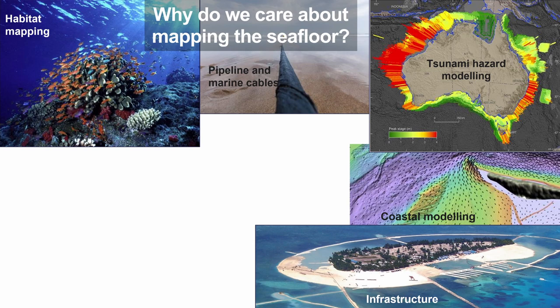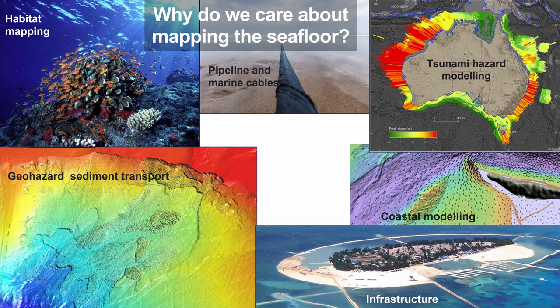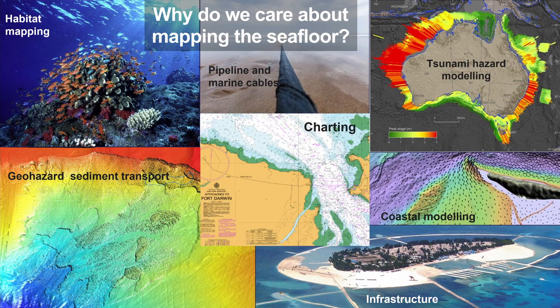We also use seabed maps to figure out how sediment — the dirt in the ocean — might be transported. As sediment moves around it can affect underground infrastructure and coastal communities, and also gives us a good story about the processes in an area over time. And perhaps one of the most traditional uses is for charting — really important for navigation and safety at sea, because you do not want to accidentally go over a bank or a shoal just below the surface that can scrape the bottom of your boat.